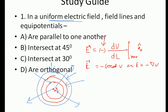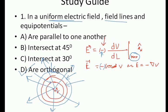In a uniform electric field, these are the field lines and these are the equipotentials. The field lines and the equipotential surfaces are clearly orthogonal to each other. The correct answer is they are orthogonal. The negative sign signifies that the field moves towards decreasing potential, and the maximum rate of change is the unit vector along the direction of decreasing potential.